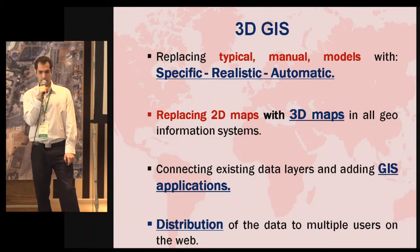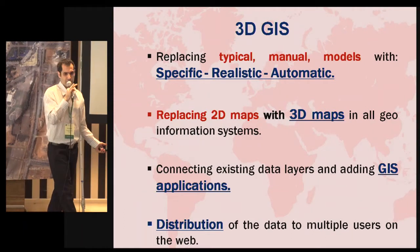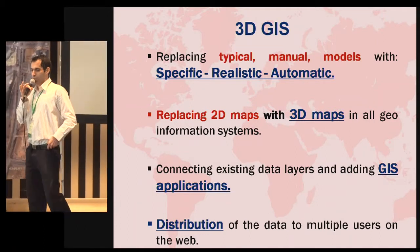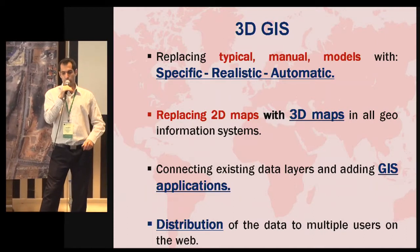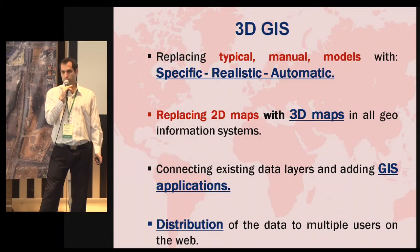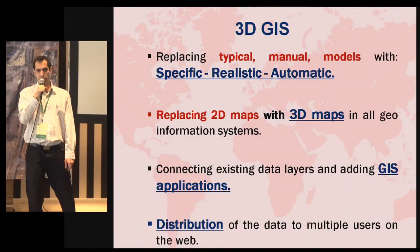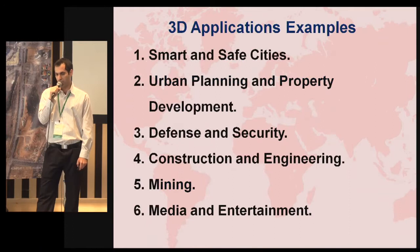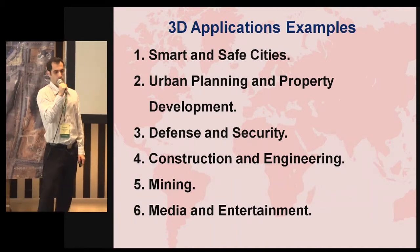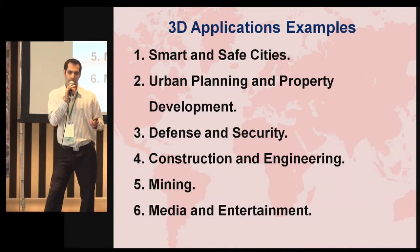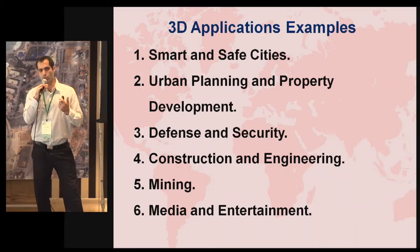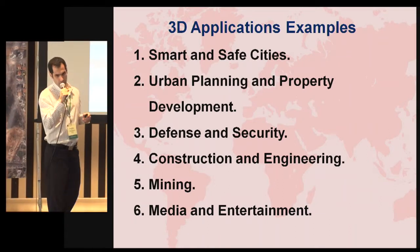3D GIS basically means a 3D model alone is not enough — it looks nice, but it doesn't have added value by itself. To have added value, we need to connect it with existing data layers and distribute the data. We believe that in a few years we will replace all 2D maps with 3D maps — specific and realistic models. Some of the applications we've been working on include smart cities, urban planning, and a lot of defense and security. 3D models really open the market and allow many industries to make new uses of geospatial data.